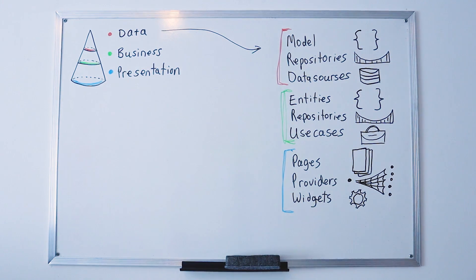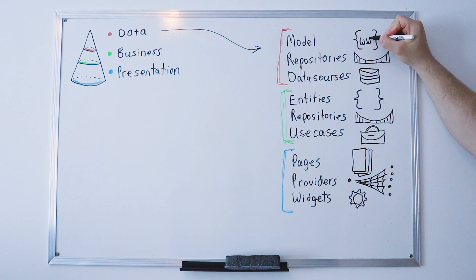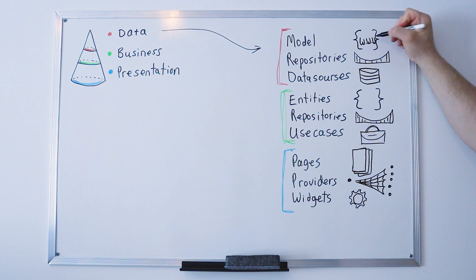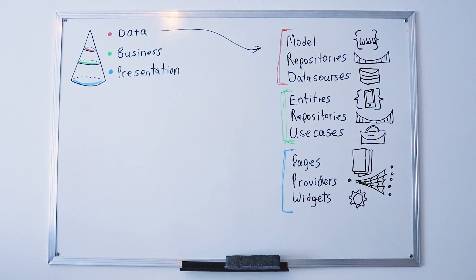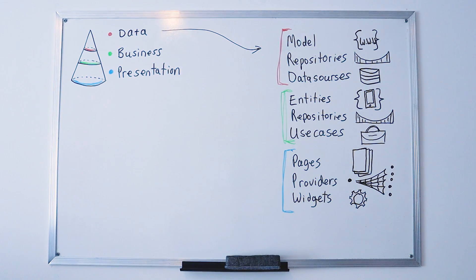Because the model and the entity share the same bracket image, we distinguish them by what's inside. Models represent data coming from the outside — the internet. Entities represent data on the phone, which we represent with a phone icon.